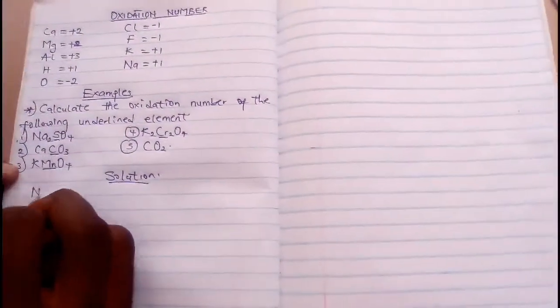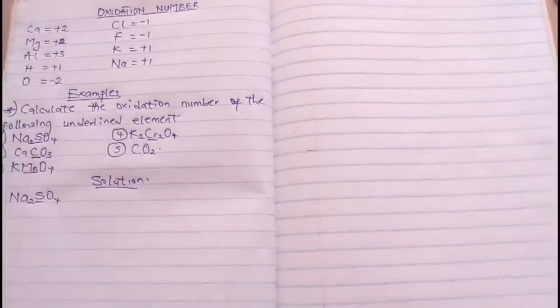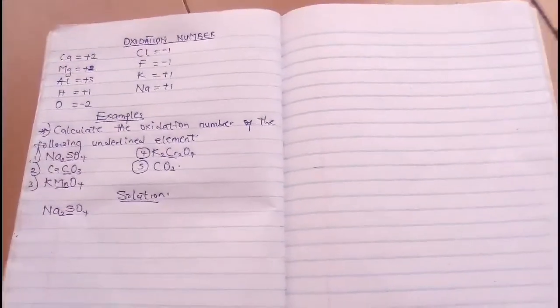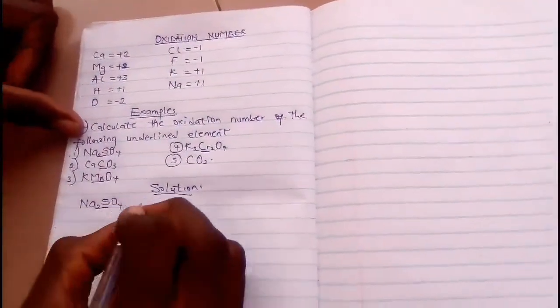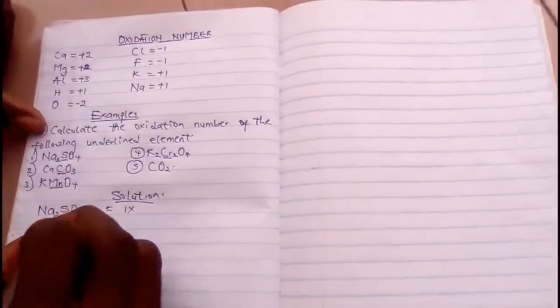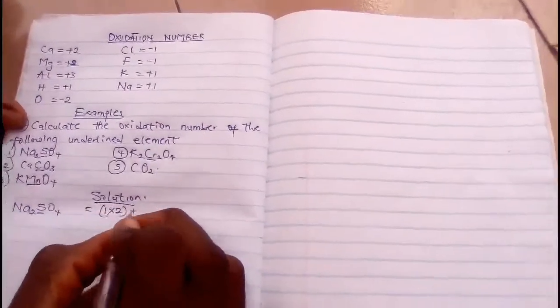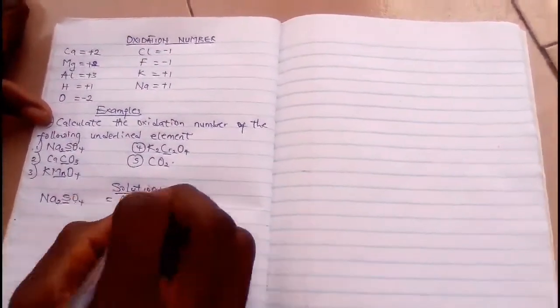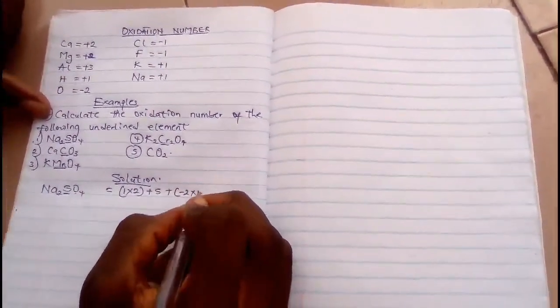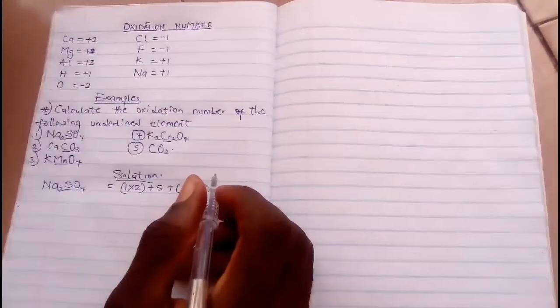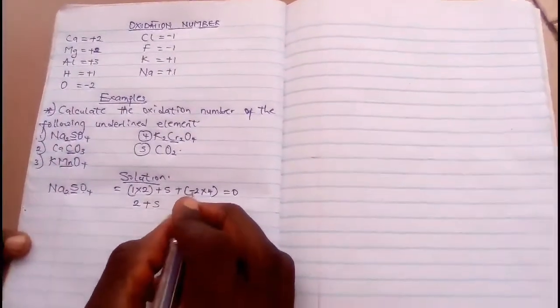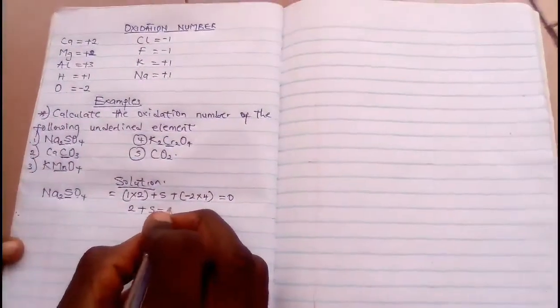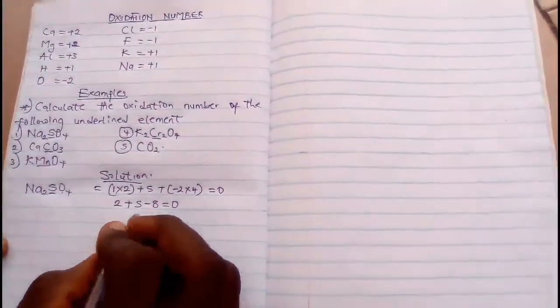If you are told to calculate Na₂SO₄, which is the oxidation number of sulfur, this is what you must know. Sodium is +1 from here. So I'll write 1 times 2 in brackets, plus sulfur S, plus oxygen which is -2 times 4. Equate everything to zero. Please don't forget to equate, you must equate everything to zero. So 1 times 2 will give you 2 plus S, -2 times 4 will give you -8. Equate everything to zero.